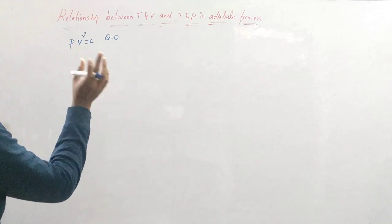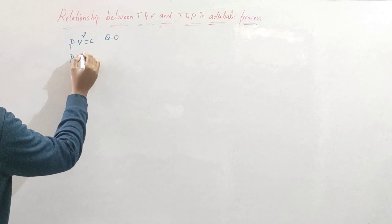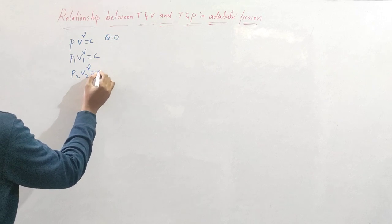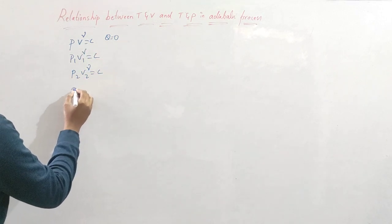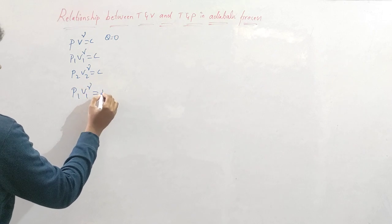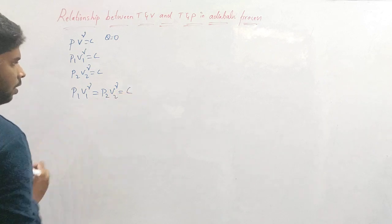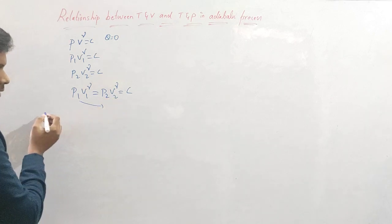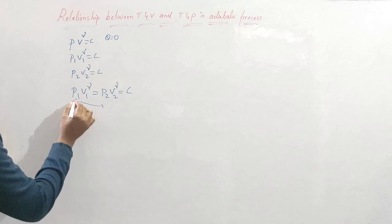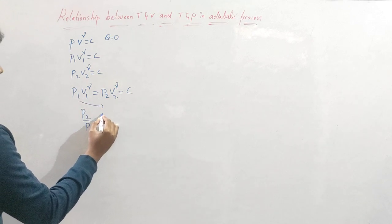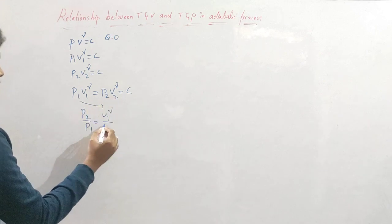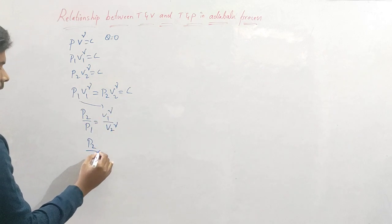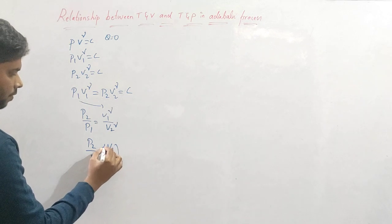So PV^γ = constant C. If I take two states, one and two, I can write P₁V₁^γ = C and P₂V₂^γ = C, so P₁V₁^γ = P₂V₂^γ. Rearranging, if I take P₁ to one side and bring V₂ to the other side, I get P₂/P₁ = (V₁/V₂)^γ. This is one of the relations between pressure and volume.